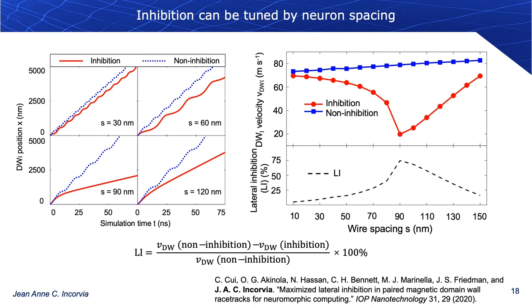Inhibition can be tuned by neuron spacing. Looking at domain wall position versus time for inhibited versus non-inhibited cases across four different spacings, at 30 nanometers there is little difference, the largest difference occurs at 90 nanometers, and less difference at 120 nanometers. By converting minimum velocity to a lateral inhibition parameter — defined as the velocity difference divided by the non-inhibited velocity times 100% — we achieve up to 75% lateral inhibition at 90-nanometer spacing for these particular material parameters.